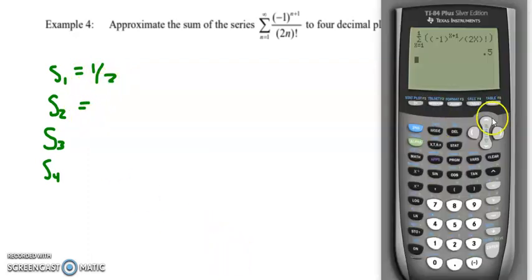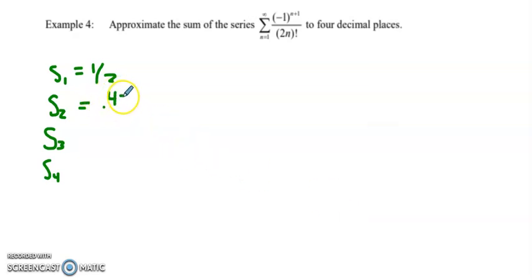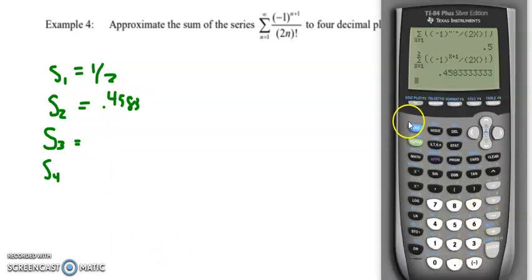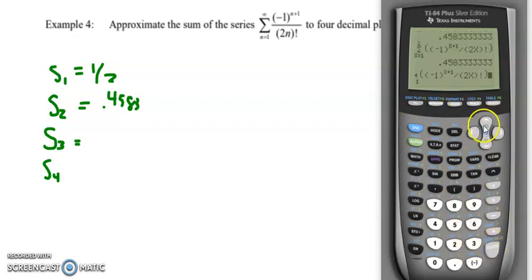So now let's go look at the sum of the first two terms. What I do is I go back in, let's grab this, and I'm going to change my upper index to 2. So this will take us the sum of the first two terms, 0.4583. And four decimal places means I need to have repeating four decimal places. So I'm going to repeat this process until I get the first four decimal places repeating.